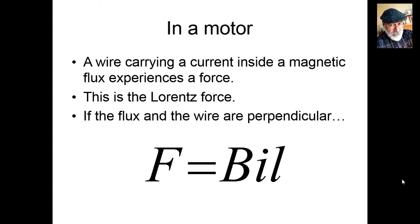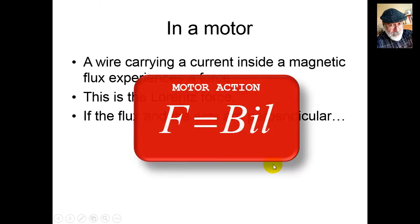the force is given by this simple formula. The force in Newtons depends on the flux density B in Webers per meter squared (that is, Teslas), the current i in amps, and the length of the conductor l in meters. Not the total length of the wire, only the section inside the magnetic flux. That is the Lorentz force, the Bil force. We call that the motor action.